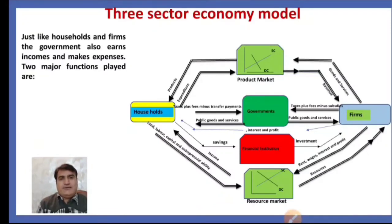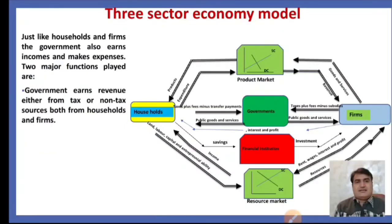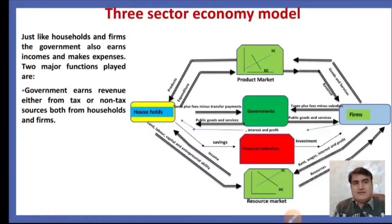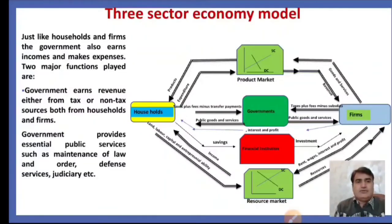Just like households and firms, the government also earns income and makes expenditures. Two major functions are played: first, the government earns revenue from both tax and non-tax sources from households and firms. Second, the government provides essential public services such as maintenance of law and order, defense services, and judiciary to households and firms.